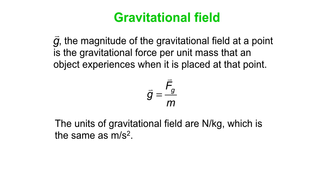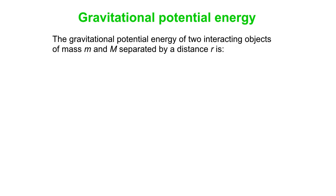On the surface of the Earth, the acceleration due to gravity is 9.8 meters per second squared, or equivalently, the strength of the gravitational field is 9.8 newtons per kilogram directed downward — meaning every kilogram of material feels a force of 9.8 newtons. Now, for potential energy, we have two objects — little m and big M — separated by a distance r.